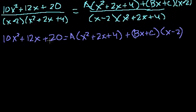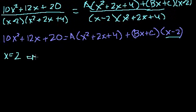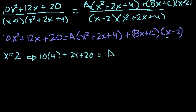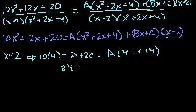With x equal to 2: the left side gives 10 times 4 plus 12 times 2 plus 20, which is 40 plus 24 plus 20 equals 84. The right side gives A times (4 plus 4 plus 4) equals 12A, and the Bx plus C term becomes 0. So 84 equals 12A, and dividing both sides by 12 gives A equals 7.